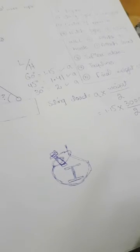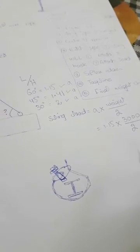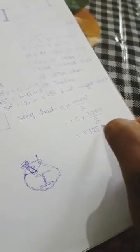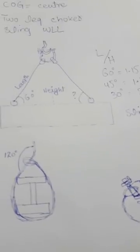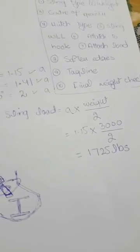So here if we use 60 degree angle, it is 1.15 times the weight. Weight is 3,000 pounds, divided by 2, so for this it is 1,725 pounds. The load working load limit of each sling is 1,725 pounds for an I beam.